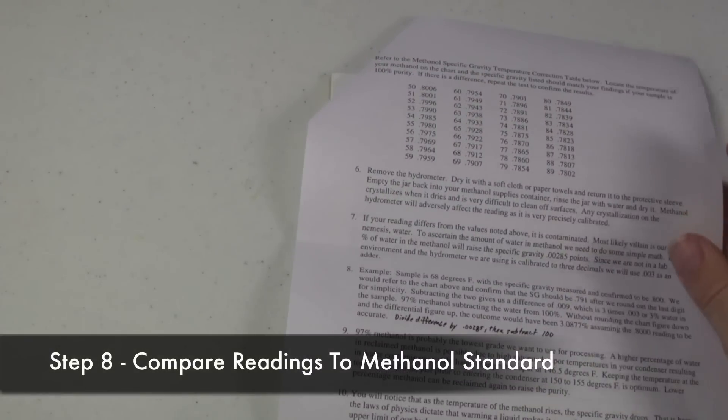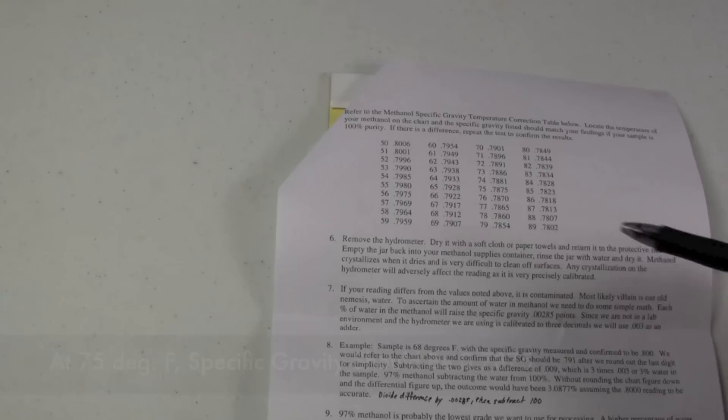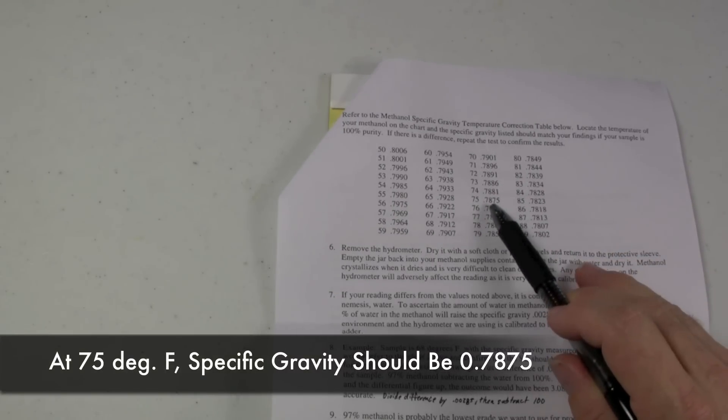What we do is we grab the included chart that comes with our hydrometer, and we look at the temperature. At 75 degrees Fahrenheit, methanol, if it's 100% pure, should be .7875. I think our methanol is pretty pure.